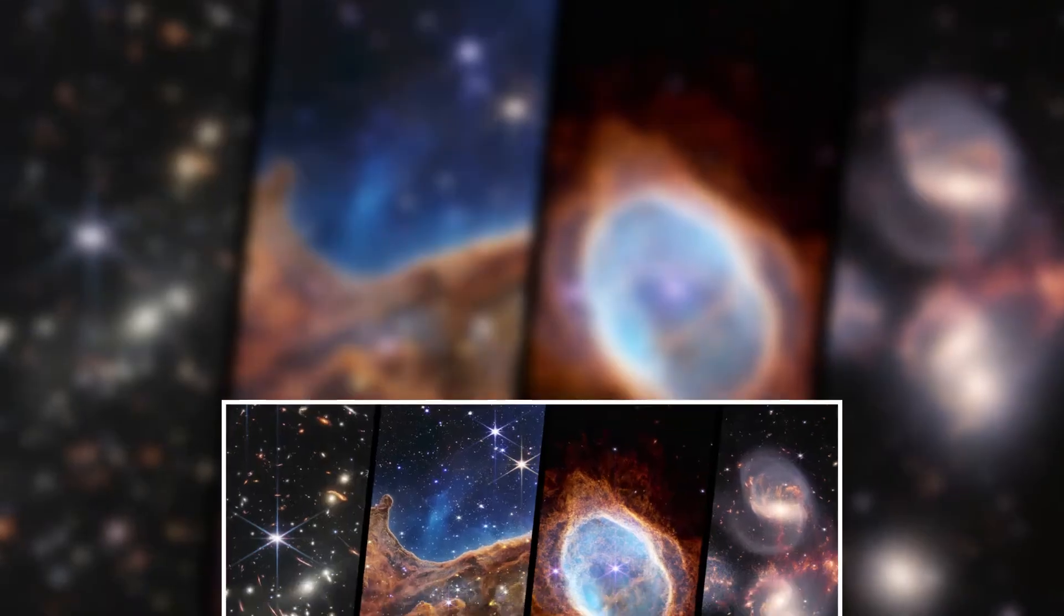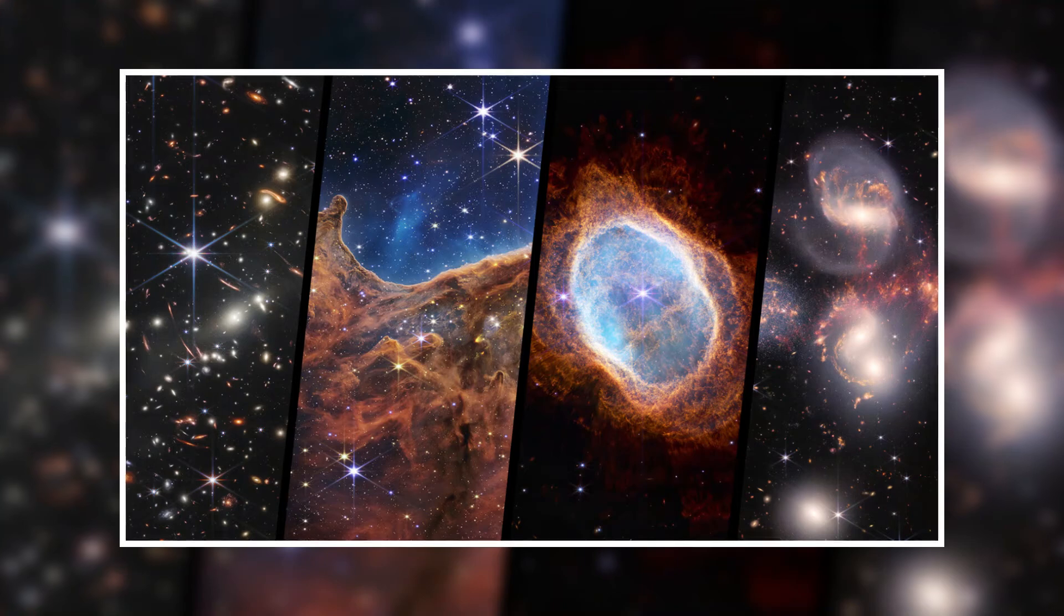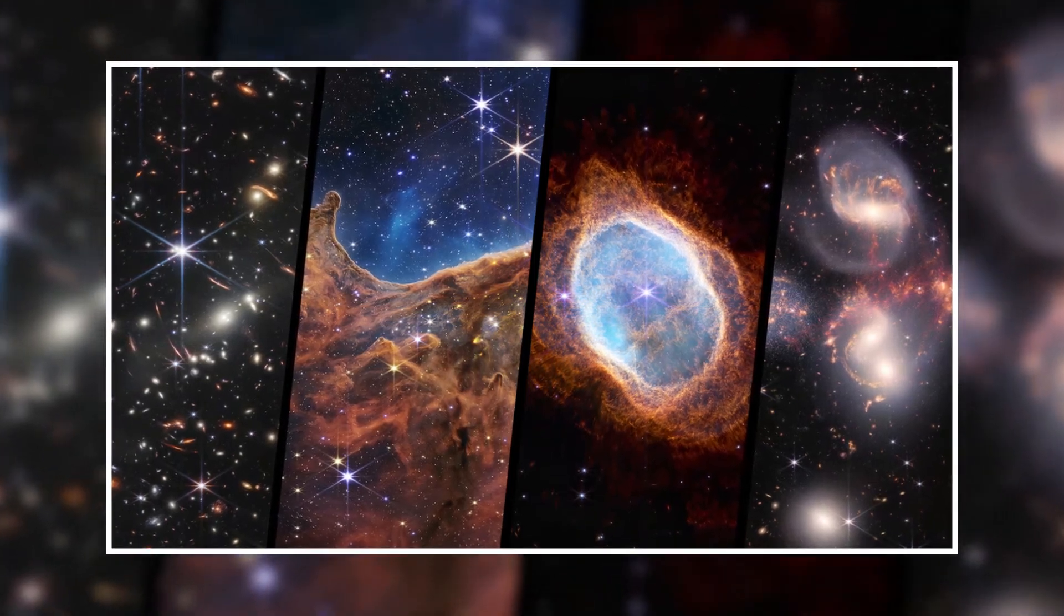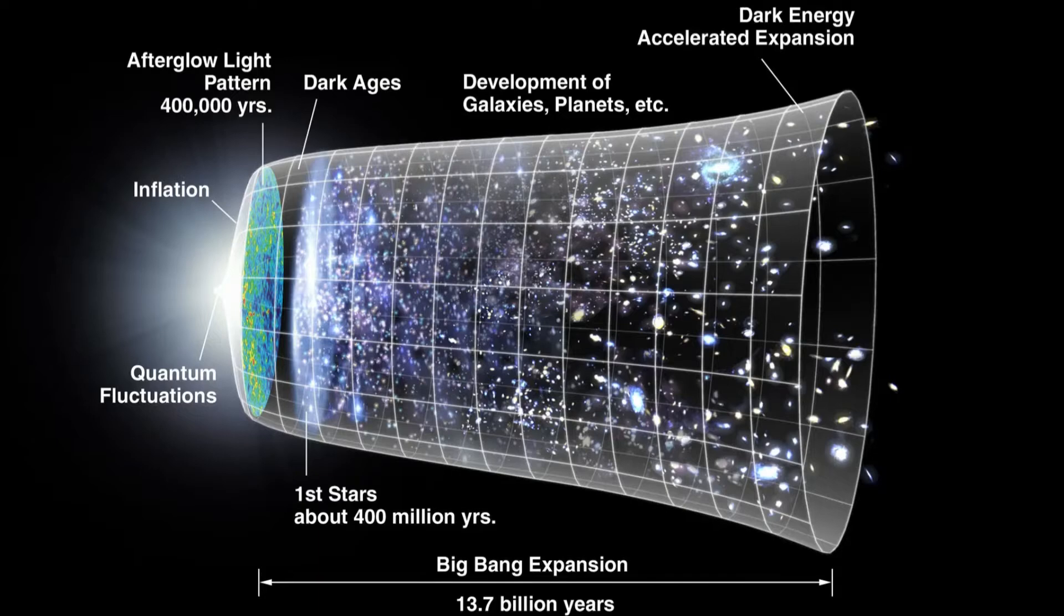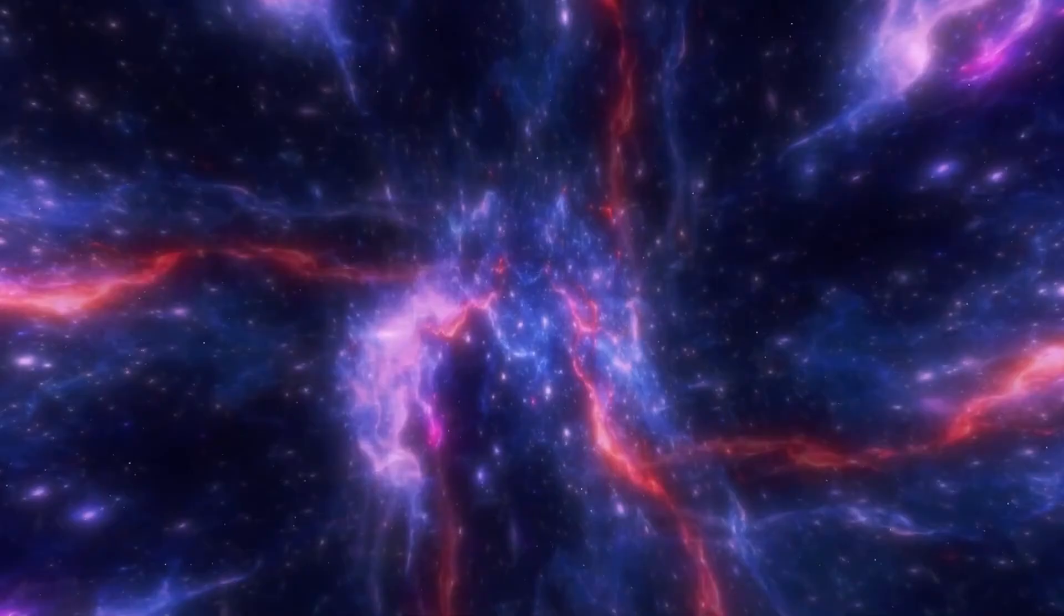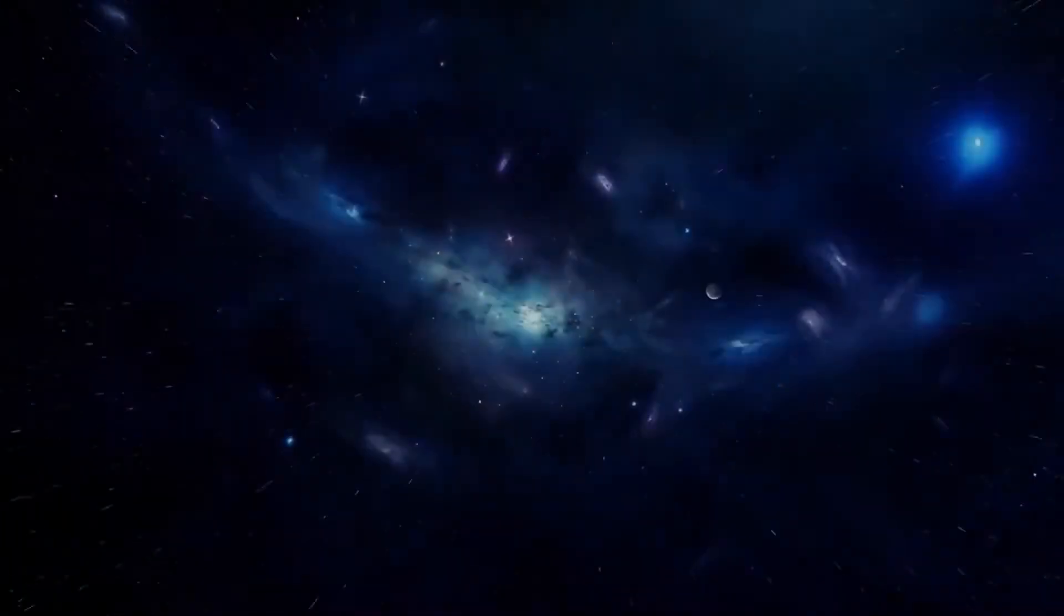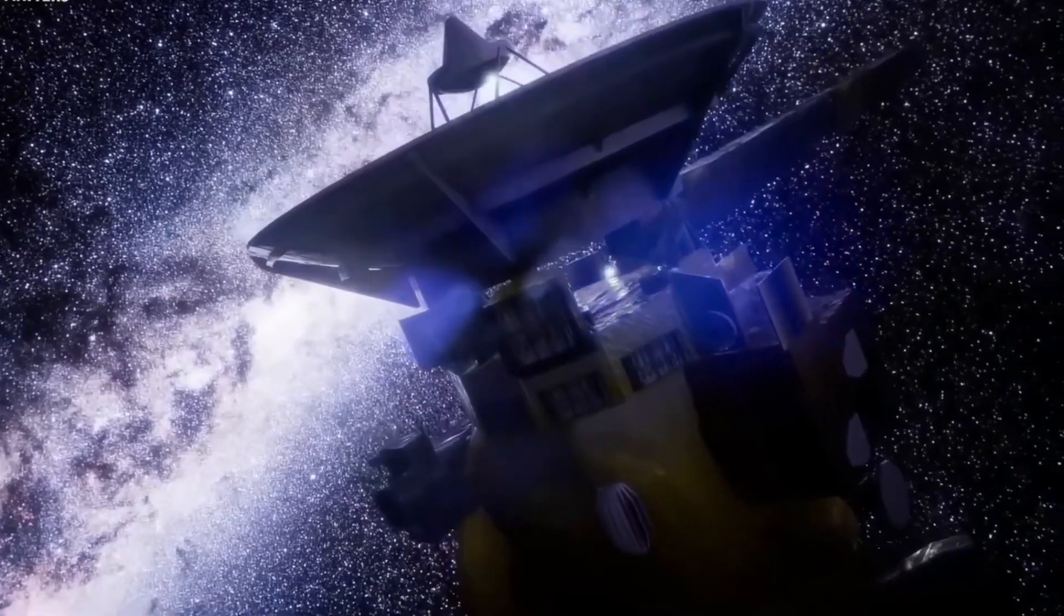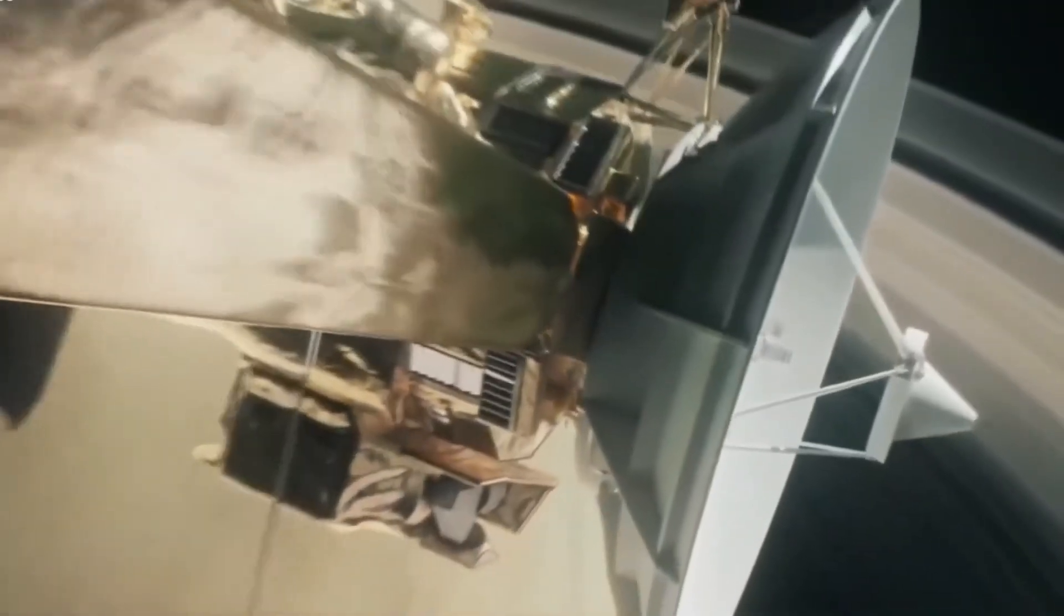Since its startup in the summer, the James Webb Space Telescope has shed new light on some of the most amazing discoveries made in space. Recently, the Webb team used the telescope's infrared vision to see through Titan's thick atmosphere and found what they think is a methane sea, sand dunes, and clouds.